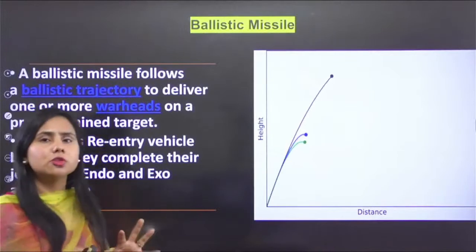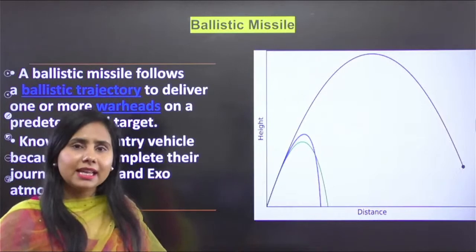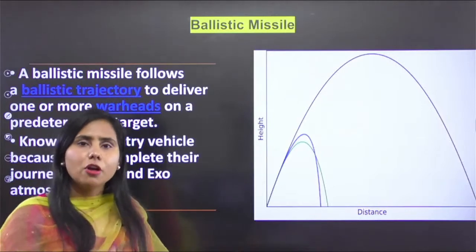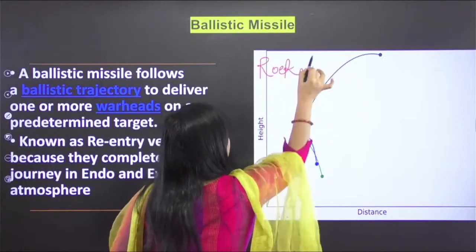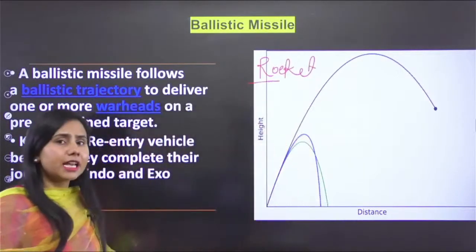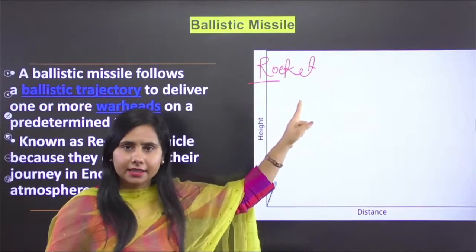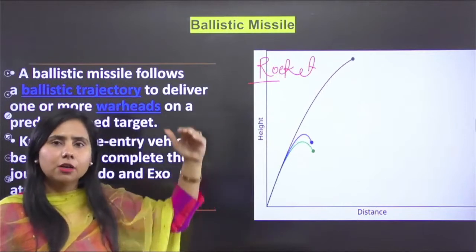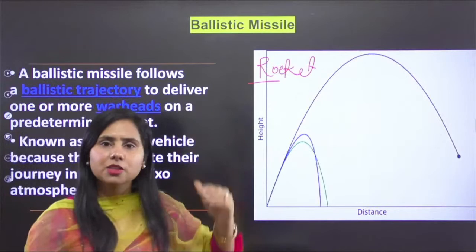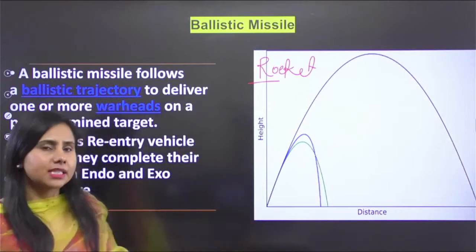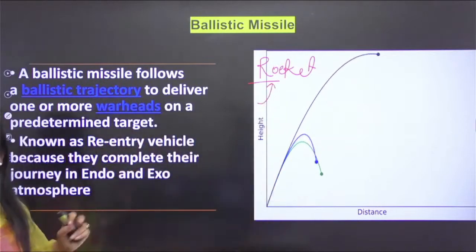Now let's see exactly what ballistic missiles and cruise missiles are. In simple words, a ballistic missile is one that relies on rocket-based technology for launch. This means a ballistic missile can go to greater heights, can remain in space for more time, and carries its own oxidizer.